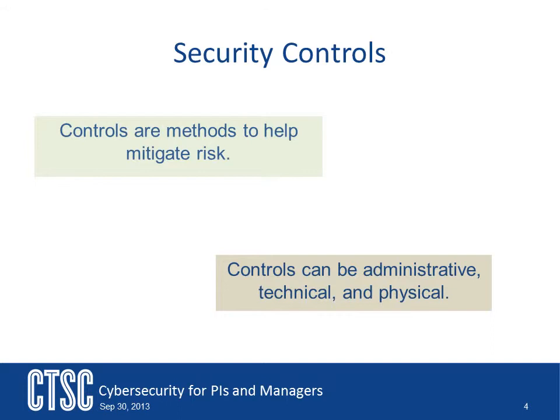Controls can be thought of as performing the following actions. Risk Assumption: to accept the potential risk and continue operating the IT system, or to implement controls to lower the risk to an acceptable level. Risk Avoidance: to avoid the risk by eliminating the risk cause and/or consequence — that is, forego certain functions of the system or shut down the system when risks are identified.